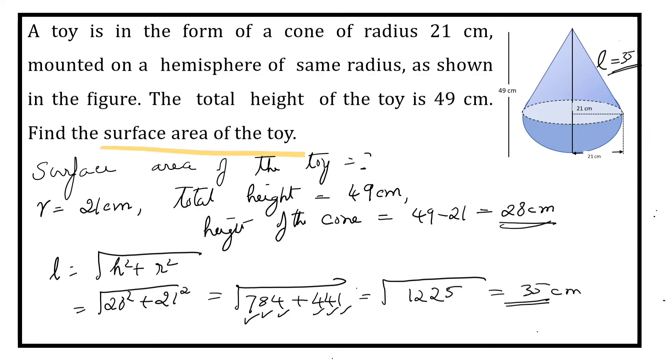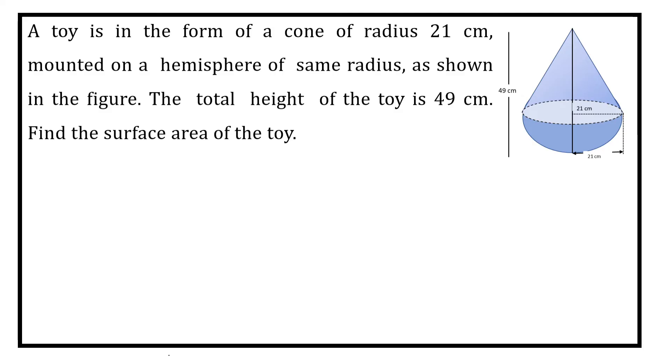Now we have to find the curved surface area. We already know that curved surface area of the toy is equal to CSA of cone plus CSA of hemisphere. CSA of cone is πRL plus CSA of hemisphere is 2πR². This R² can be written as R into R.